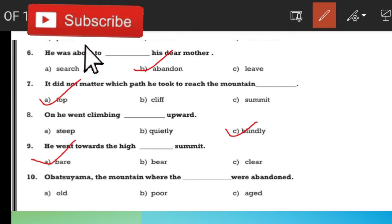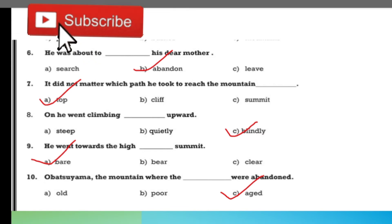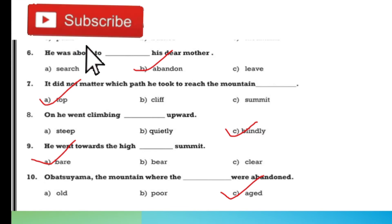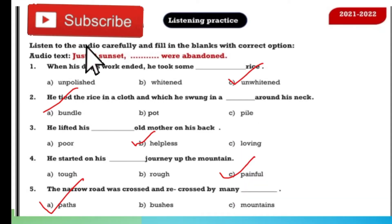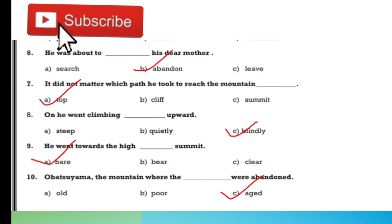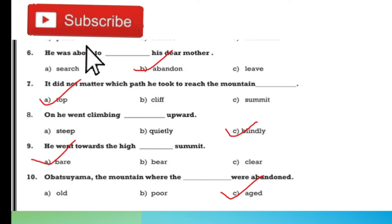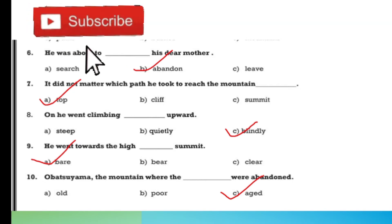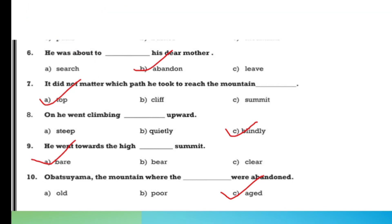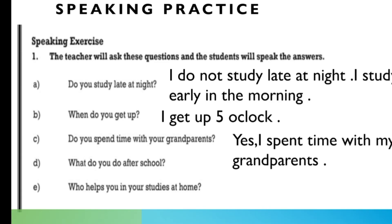The tenth answer is C. So A and C are the answers. When you open school, you can go to the practicals. You will be assessed out of 20 marks — 10 marks for listening and 10 marks for speaking.